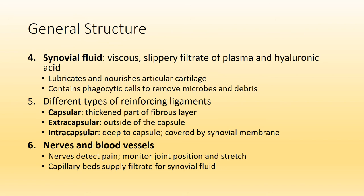When we get into the knee and shoulder joint, we will talk about different types of ligaments — such as the ACL and PCL — which help to reinforce the joint and provide stability. Lastly, synovial joints will have nerves and blood vessels. The nerves tell you where your body and limbs are in space and help detect pain, monitor position, and stretch. Blood vessels and capillary beds are also present to allow for exchange of nutrients and wastes.